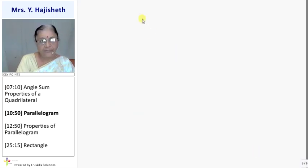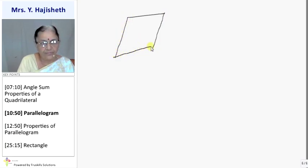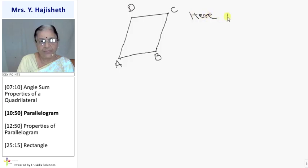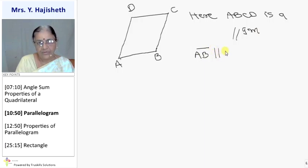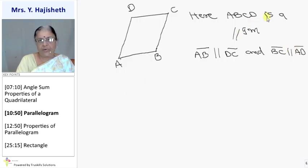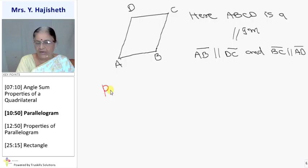Let us see the figure of a parallelogram ABCD. Here AB is parallel to DC, and BC is parallel to AD. Both pairs of opposite sides are parallel to each other, therefore it is a parallelogram. All parallelograms are quadrilaterals, but all quadrilaterals are not parallelograms.